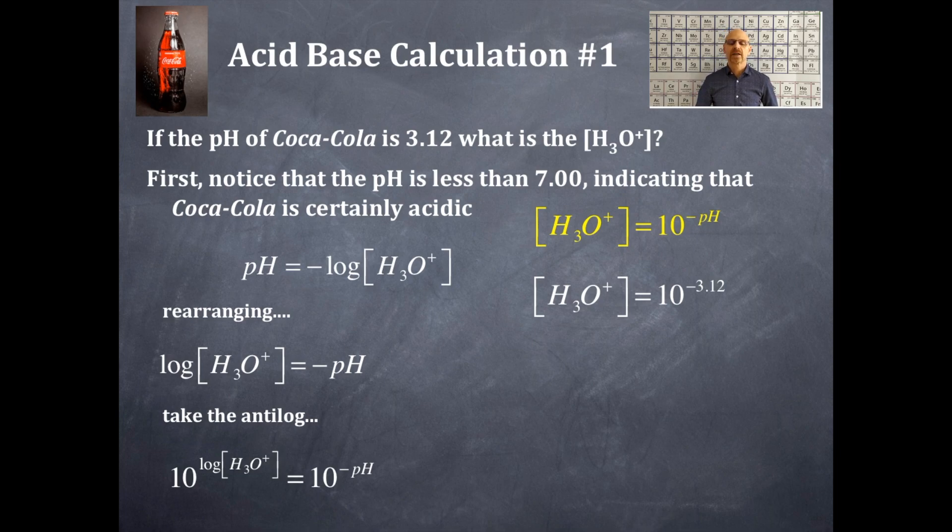Okay. And then we're going to plug that into our calculator here. And remember those brackets mean a concentration in moles per liter. That's molarity. So our answer here is hydronium ion is equal to 7.59 times 10 to the negative 4 molar.